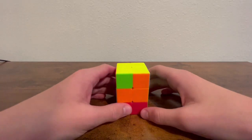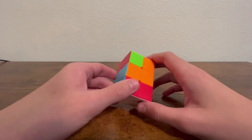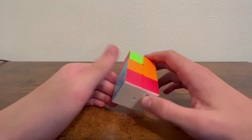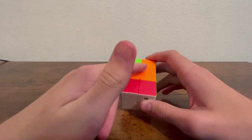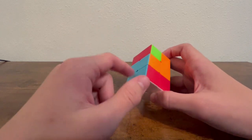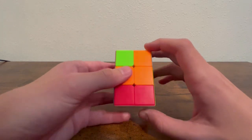So now you're on the last step. The first thing is to check if your bar is flipped. If you have a layer solved and your side does not match this side, but this side matches on here, you have a bar flip.